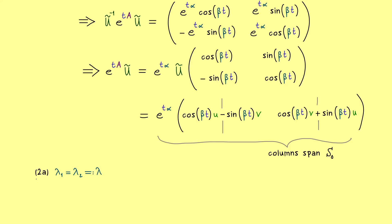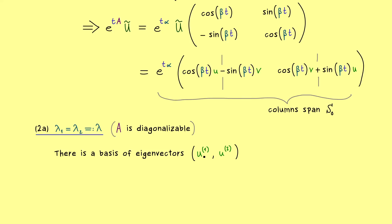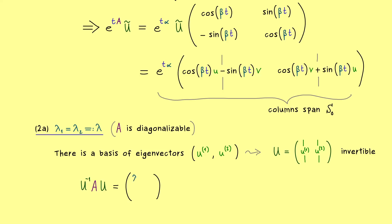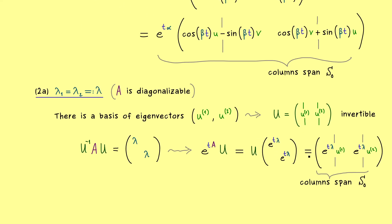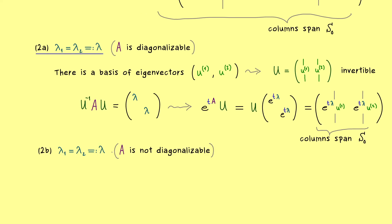Now we move to Case 2A, which has only one eigenvalue, but we still find enough eigenvectors to properly diagonalize A. This works more or less the same as Case 1A. We have a basis of eigenvectors which we put into a matrix U, and the only difference from Case 1A is that both entries on the diagonal of the diagonal matrix are the same number. The eigenvectors are still linearly independent, so they span a two-dimensional subspace — our solution space. Case 2A is done.